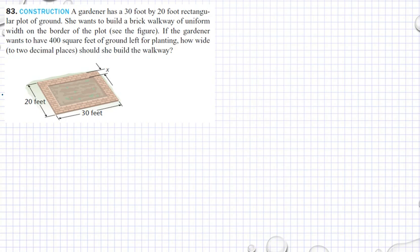Construction problem: A gardener has a 30 foot by 20 foot rectangular plot of ground as you can see in the figure. She wants to build a brick walkway of uniform width on the border of the plot.